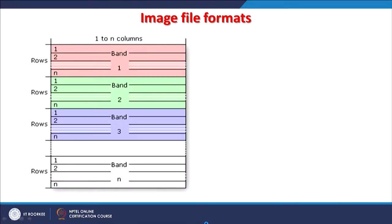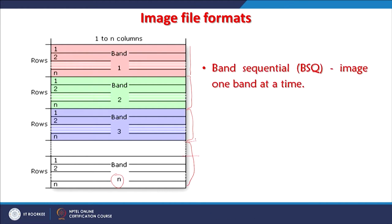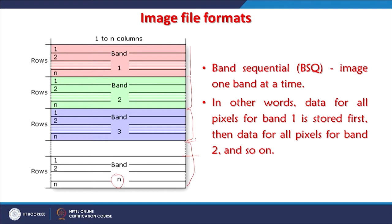In the band sequential format, all information about all lines of band 1 are stored first at the top, then all lines of band 2, then band 3, and so on. This is the most common format nowadays. In other words, all pixel data for band 1 are stored first, then for band 2 next, and so forth until you reach the end of the bands.